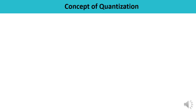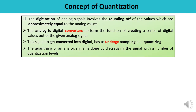First, let us understand and revise the concept of quantization. In a communication system, sometimes we have an analog signal but require a digital signal for a particular application, meaning we have to convert the available analog signal into a digital signal — a continuous time signal into the form of digits. Analog to digital converters (ADC) perform the function of creating a series of digital values out of the given analog signal, and the signal to be converted must undergo sampling and quantization.